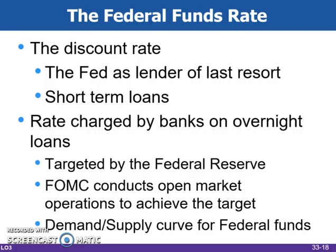The Federal Funds Rate serves as the equilibrium rate for this market of bank reserves. The Federal Reserve targets this rate by manipulating the supply of reserves offered in the market, typically by buying or selling government bonds. The FOMC meets regularly to choose a desired Federal Funds Rate and then directs the Federal Reserve Bank of New York to undertake the open market operations needed to achieve that rate.